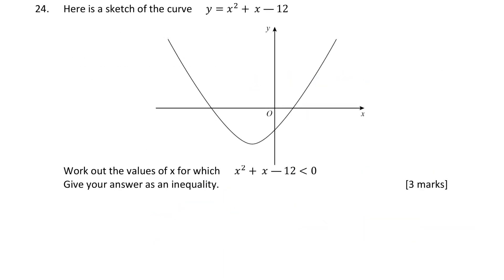Question 24. Here is a sketch of the curve y equals x squared plus 4x minus 12. So it's a quadratic. Work out the values of x for which the quadratic is less than 0. Give your answer as an inequality. This is the graph of y equals x squared plus 4x minus 12. So if we want to know where this inequality is less than 0, we're saying where is this curve less than 0? This curve is less than 0 when it's under the x-axis.